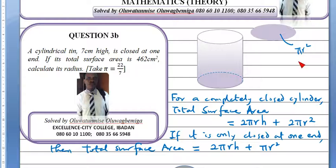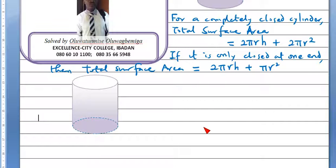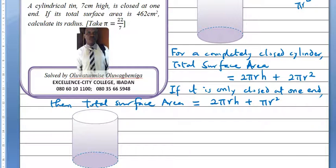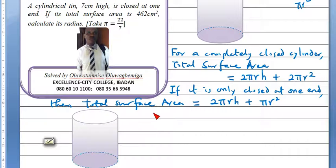So, out of 2 pi r square, if I remove pi r square, it remains 1 pi r square. Now, we are given the height and the radius in the question. We are told that the height is 7. We are given the height and we are given the total surface area. That total surface area, when it is open at one end and closed at one end, is 2 pi r h plus pi r square.